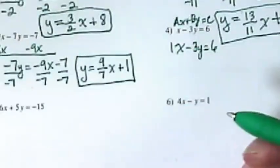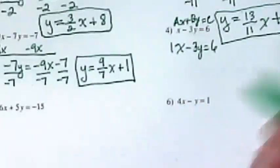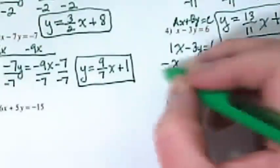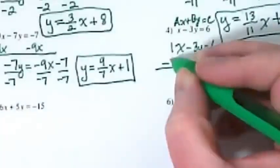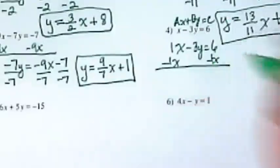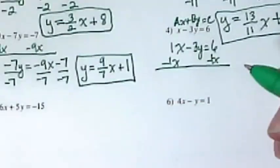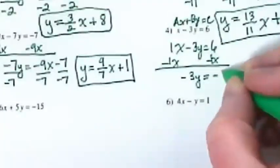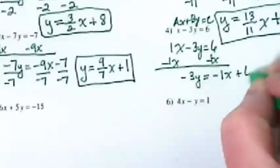What am I going to subtract here? I'm going to take the X away from both sides. And remember, it's a negative 1X that I'm taking away. So I ended up with negative 3Y equals negative 1X plus 6.